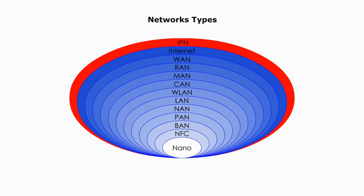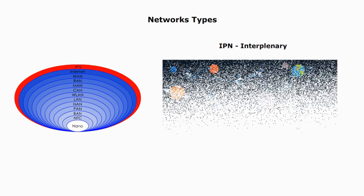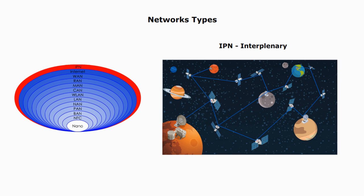The last but not least, IPN, the Interplanetary Internet. A computer network in space consisting of a set of network nodes that can communicate with each other.